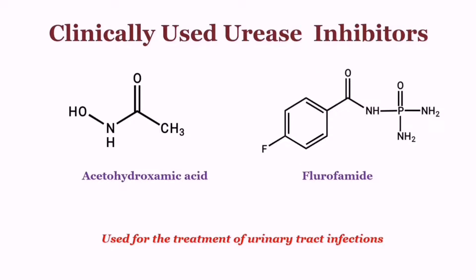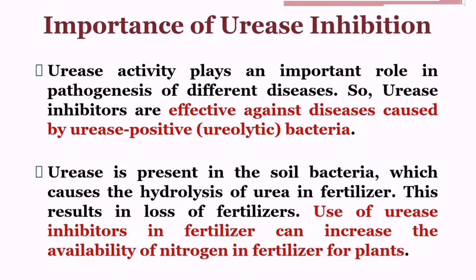These are the urease inhibitors which can be used clinically: acetohydroxamic acid and flurofamide. The importance of urease inhibition is that we can treat H. pylori infections by inhibiting urease.